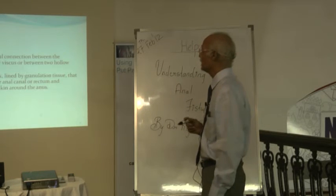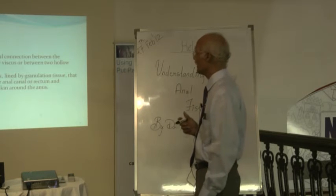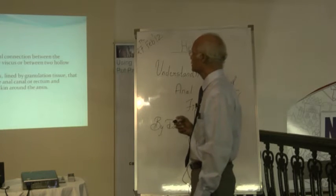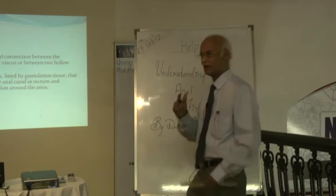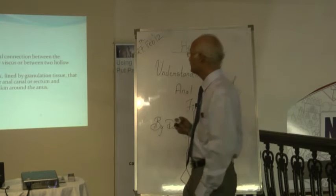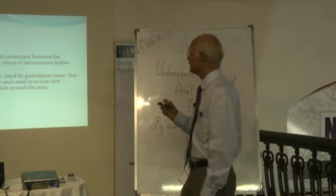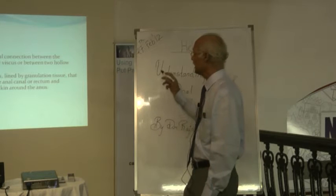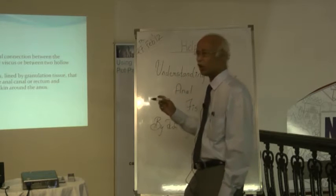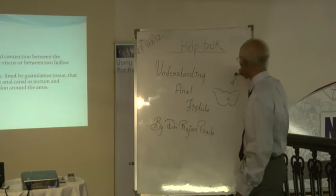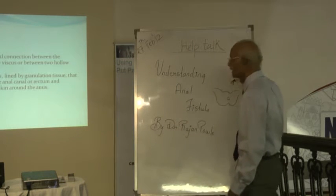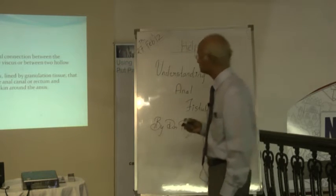Fistula in ano is a tract which is lined by granulation tissue, and that connects deeply into the anal canal. If it is the higher type, it will connect to the rectum.